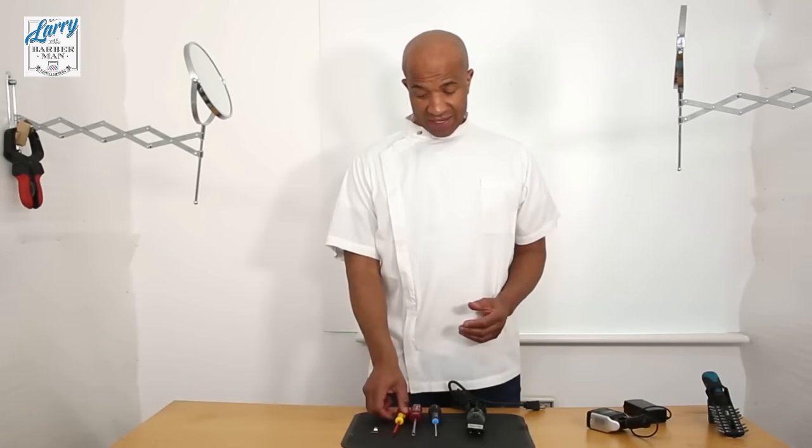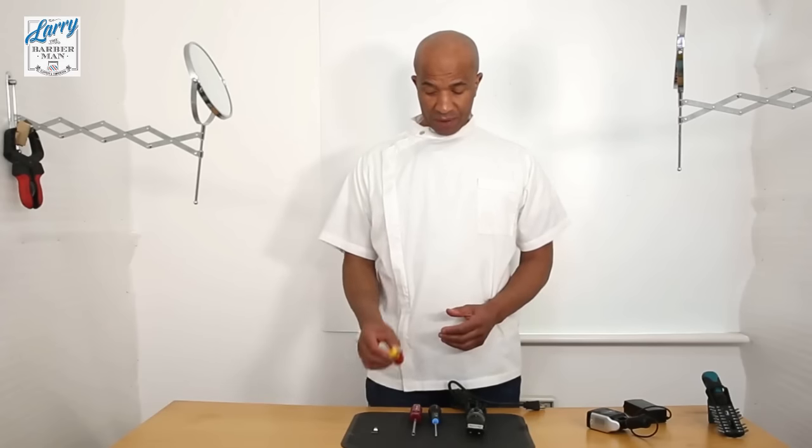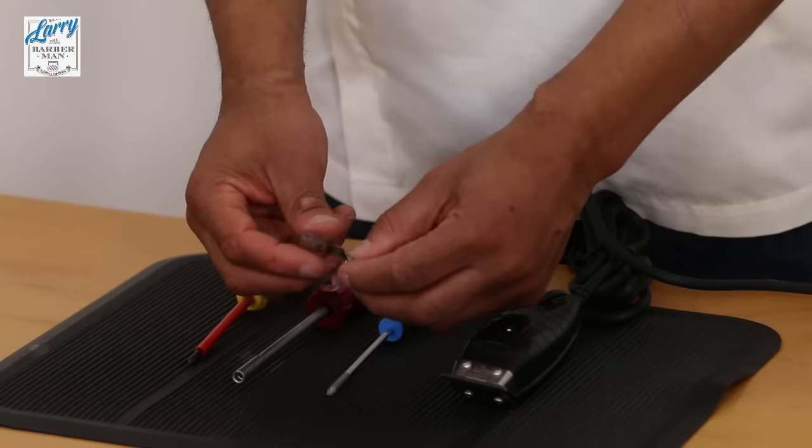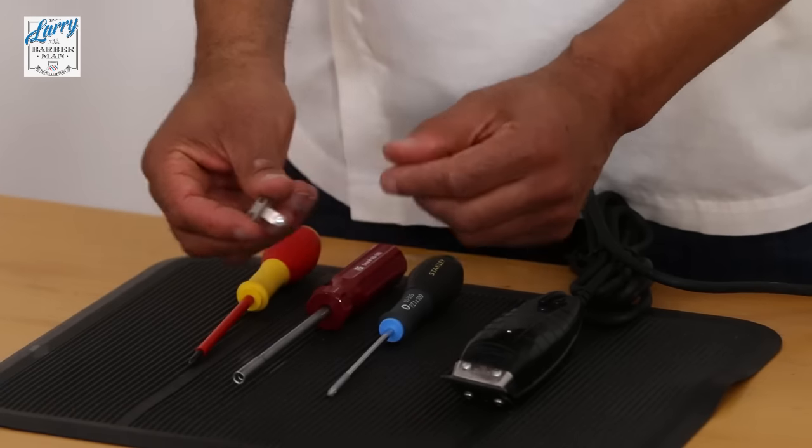Now today I'm going to show you exactly how to do that. To do this is quite a simple operation. All you need is a Phillips screwdriver, the replacement spring itself which is here and you see it with the ball there.